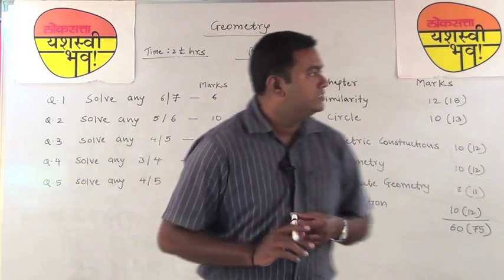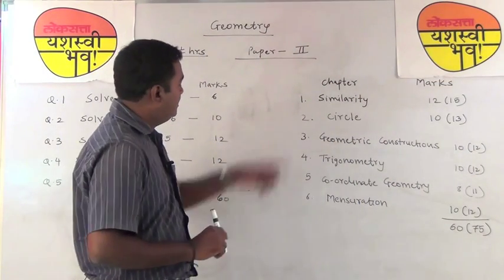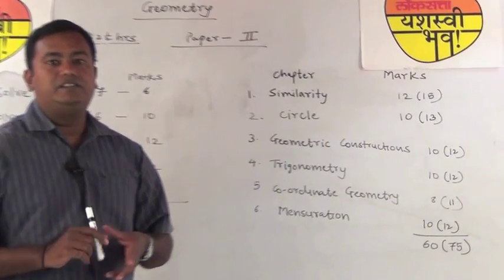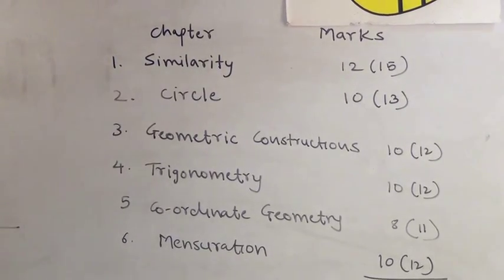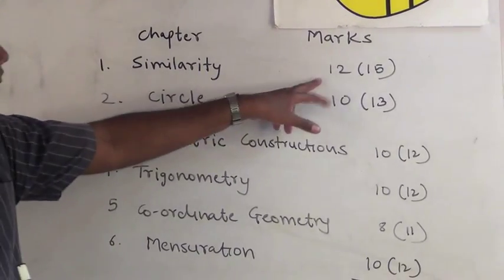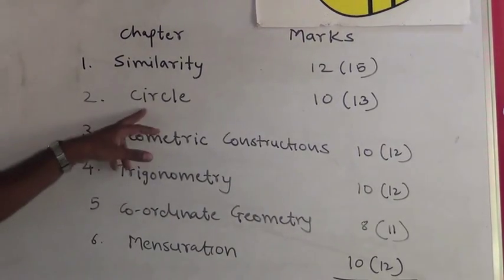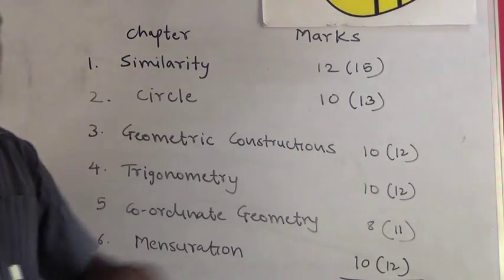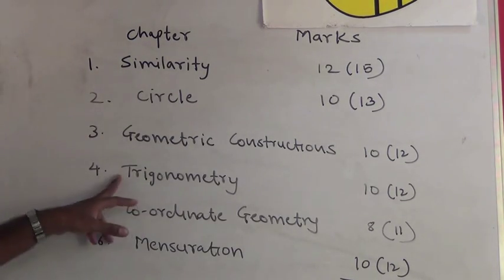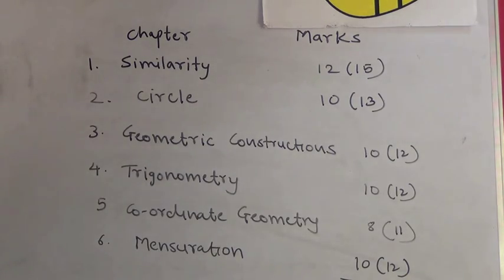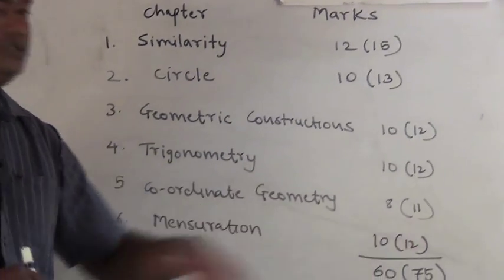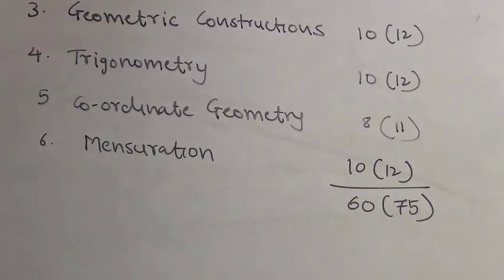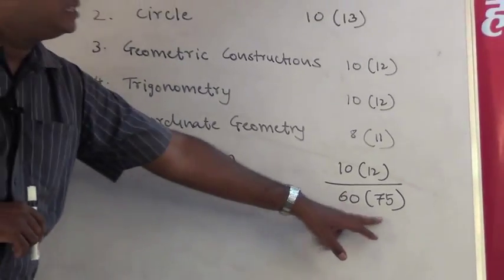As far as the textbook is concerned, there are 6 chapters. For each chapter, certain weightage is given by the board. Similarity has weightage 12 (with option: 15). Circles: 10 (with option: 13). Geometry construction: 10 (with option: 12). Trigonometry: 10 (with option: 12). Coordinate geometry: 8 (with option: 11). Mensuration: 10 (with option: 12). Total is 60 marks, and with options it is 75.